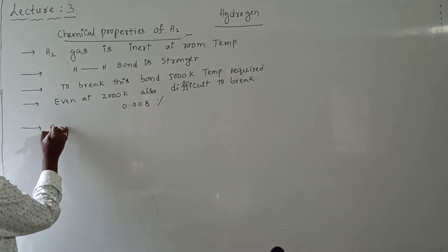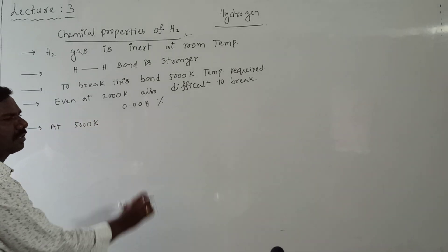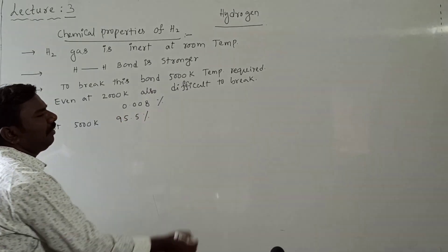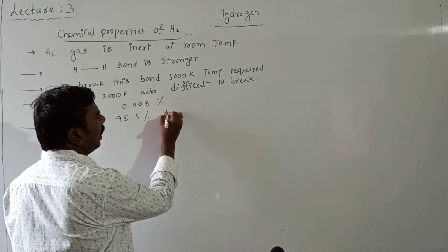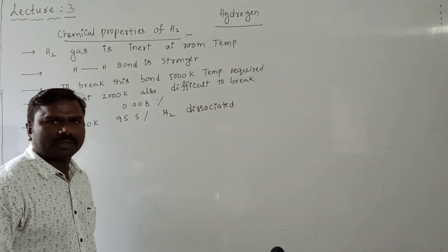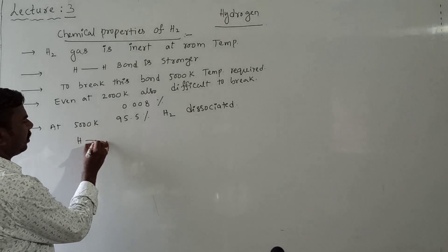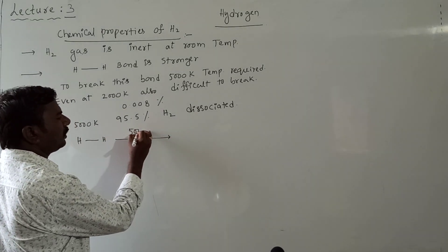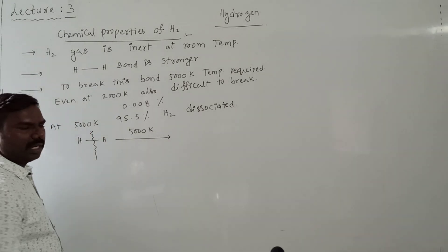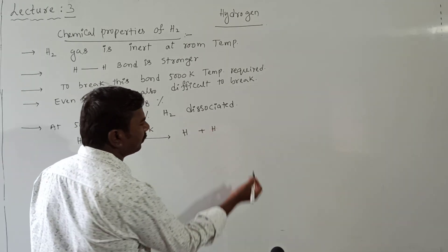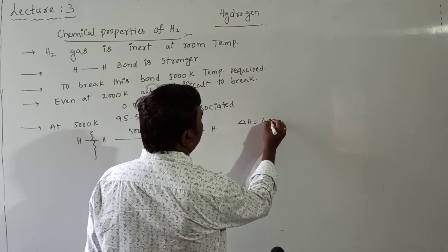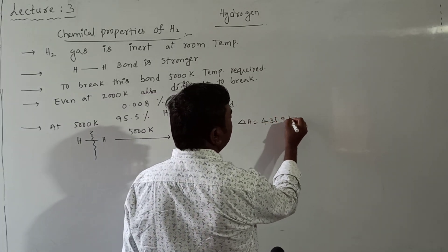At 5000 Kelvin, 95.5 percentage of hydrogen dissociates into atoms: H and H. The delta H value for breaking H₂ into atoms is 435.9 kJ.